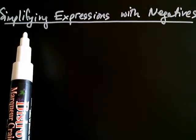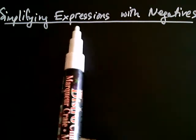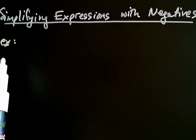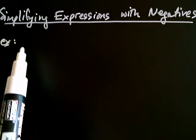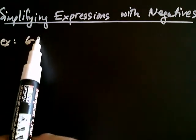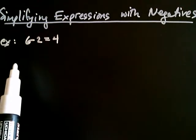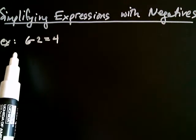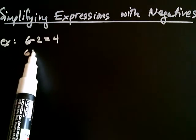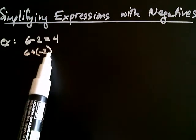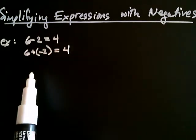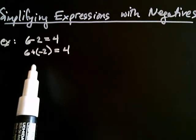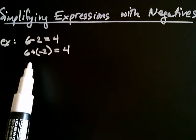In this video, let's discuss simplifying expressions with negatives. Recall that we have a second way of defining subtraction. We know that 6 minus 2 is equal to 4, but as we talked about in the video evaluating expressions with negatives, this can also be viewed as 6 plus negative 2, which is equal to 4. Sometimes this is useful.